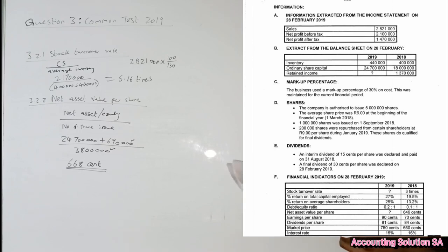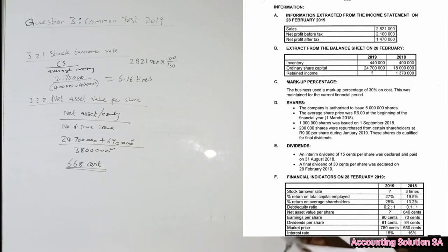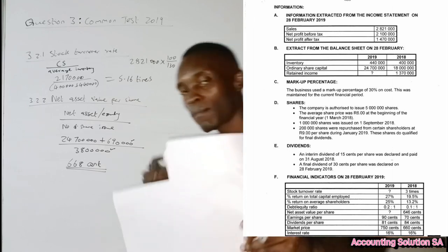Now let's look at a question that requires more thinking. For question 3.3, they say: provide calculations to show changes in the dividends payout policy and comment on its impact on retained earnings.